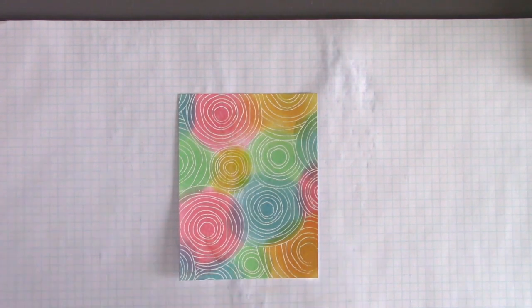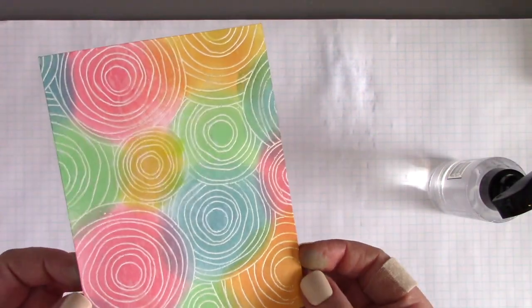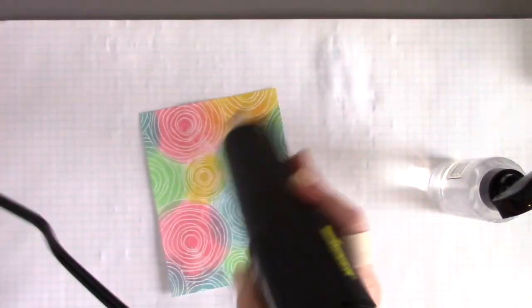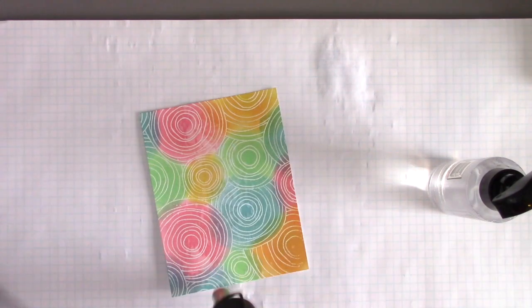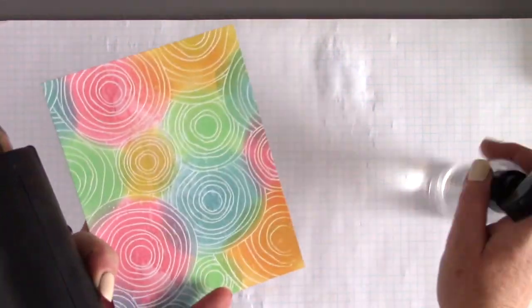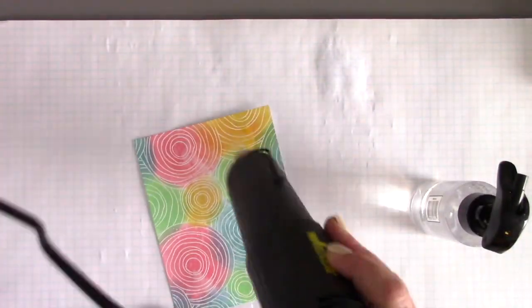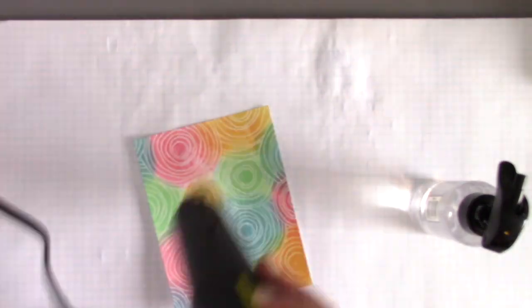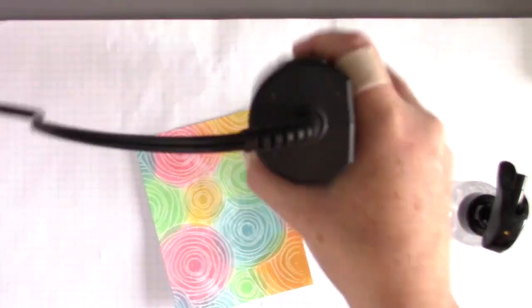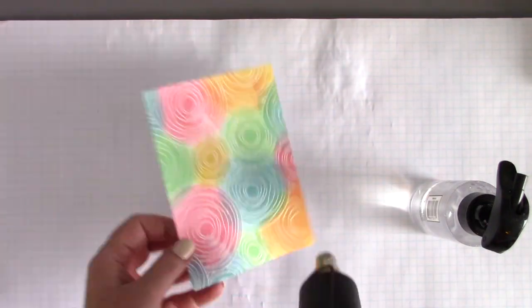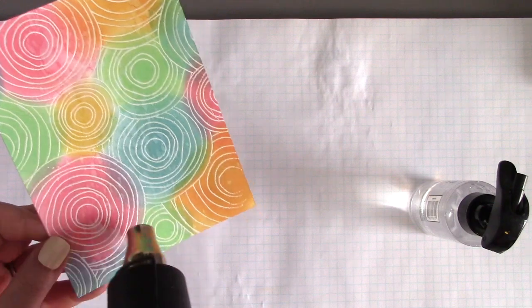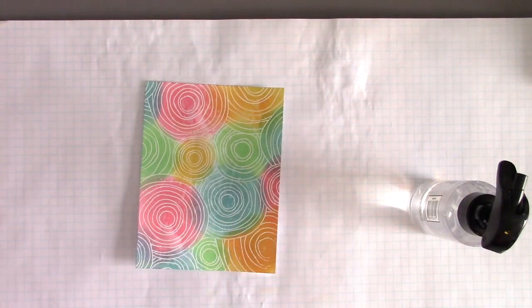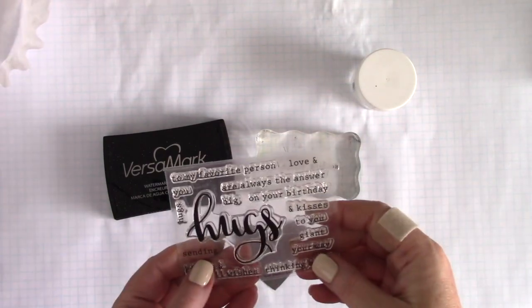Now I have the Tim Holtz Distress Ink water sprayer and I am just going to spray, spritz some water on there. When you do that, it is going to reactivate those inks. Once I see that the water is spritzing all over the place and reactivating the inks, I come in with my heat tool. Then you can start to see what they call that oxidation process, where some of the water is pulling up the color or bleaching it out almost. It gives this really great artistic watercolor effect.